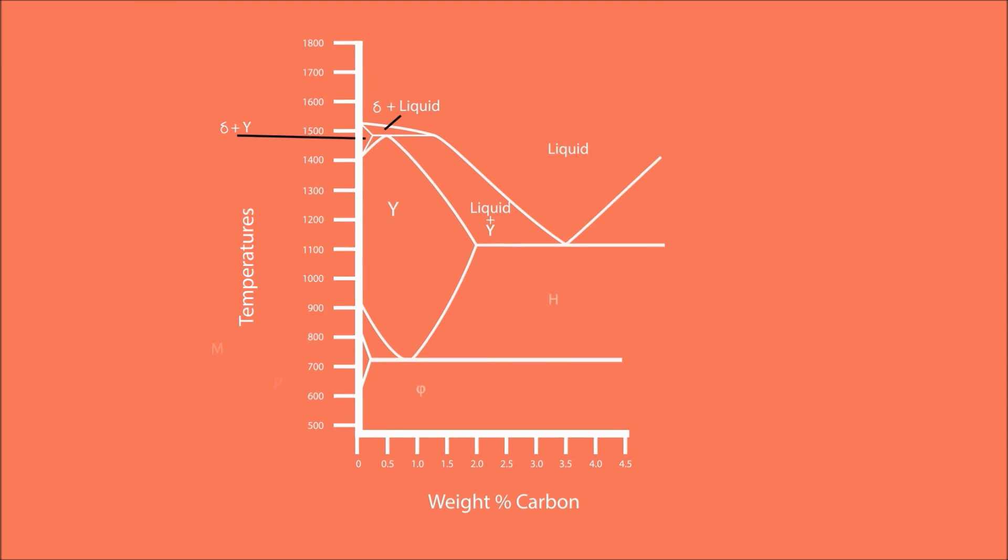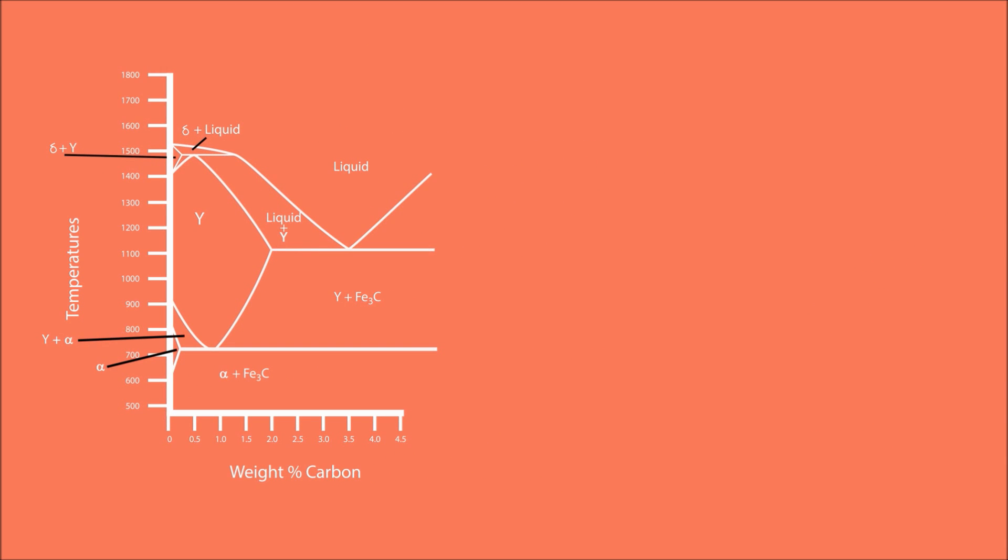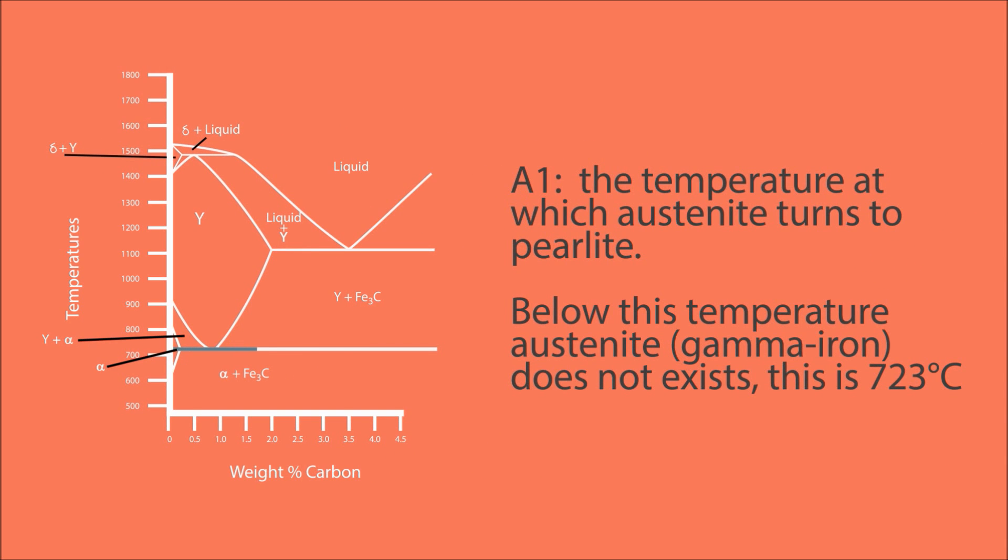On the diagram there are several points of interest. A1: The temperature at which austenite turns to perlite. Below this temperature austenite does not exist. This is 723 degrees Celsius.